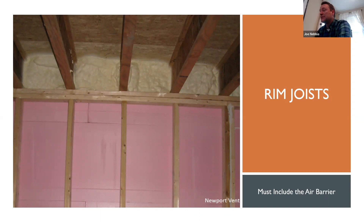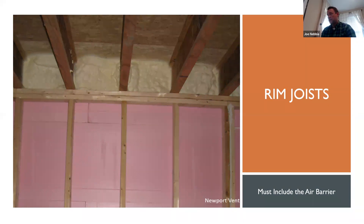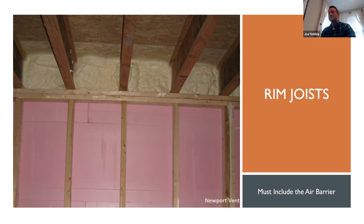Rim joists must be sealed. They must be insulated, and they must also include the air barrier. You can't skip the rim joists in the air barrier, even if you're in a floor over unconditioned space. Code says all rim joists must be part of the air barrier. Even if you're not insulating the basement below, you can't define your air barrier above that space. The rim joist has to be insulated and air sealed. If this was a floor over unconditioned space, you would see insulation there in the floor as well.